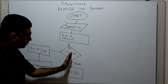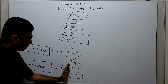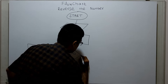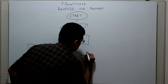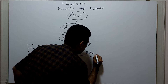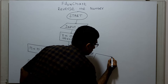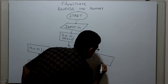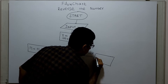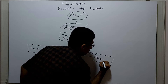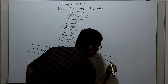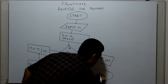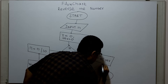So it will go until n greater than 0 is true — the loop will keep iterating. When n greater than 0 is false, I am printing the value in the variable REV. And I am ending the flowchart with the logical end.